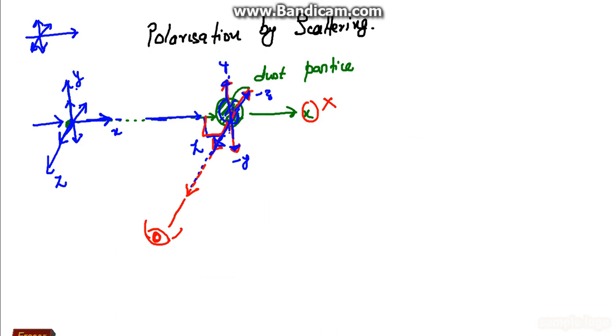Now since the propagation is along the Z axis, the vibration along Z axis is not noticeable to this observer. So he sees only a polarized light having vibration component along the Y axis. The vibrations which he sees in this case of the movement of light towards him is only along the Y axis. So this is called polarization by scattering.